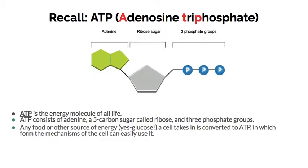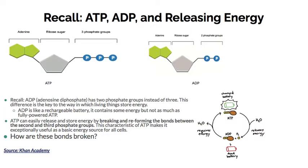ATP — we've also seen this quite a few times, but it's the energy molecule of all life. Remember the structure: you have an adenine, a ribosugar, and three phosphate groups. Here we have ATP, ADP, and how that releases energy. Remember, ADP was kind of like that rechargeable battery — it contains some energy, but fully powered ATP contains the most energy. ATP can easily release and store energy by breaking and reforming the bonds between the second and third phosphate group.